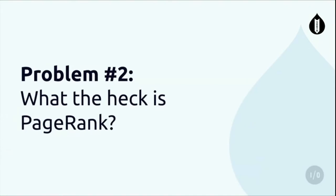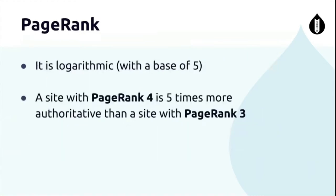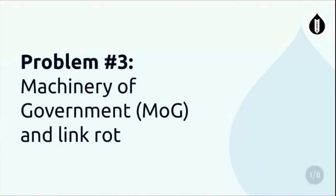The next question is: what the heck is PageRank? For those that are a bit older in the room, you probably had the toolbar installed - that was what you did back in the day, you tried to get a bigger number. It was made by Google. All you really need to know is zero means not that important, and 10 means Wikipedia basically. And it's logarithmic - think earthquakes, Richter scales. An earthquake of size seven is a lot more powerful than six, then five, and so on.